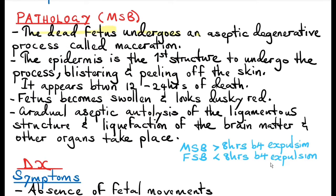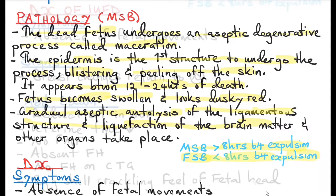When an intrauterine fetal death occurs, the dead fetus undergoes an aseptic degenerative process called maceration. The epidermis is the first structure to undergo this process, with blistering and peeling off of the skin occurring between 12 to 24 hours of death. The fetus becomes swollen and dusky red, then there is gradual aseptic autolysis of ligamentous structures and liquefaction of brain matter and other organs. A macerated stillbirth is a death that occurred more than eight hours before expulsion, whilst a fresh stillbirth occurred less than eight hours before expulsion.